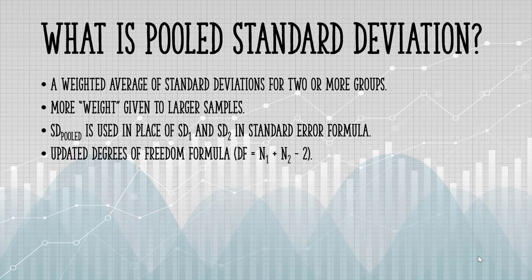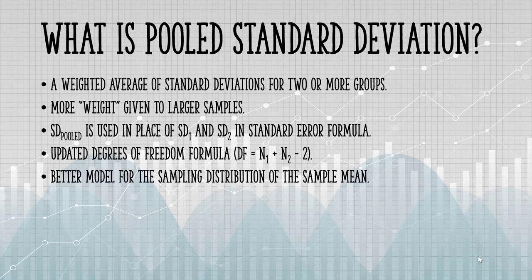Once the pooled standard deviation has been calculated, SD-pooled is used in place of the standard deviation in the formula for standard error. Along with an updated degrees of freedom formula, the idea is that you'll be able to get a better model for the sampling distribution of the sample mean.